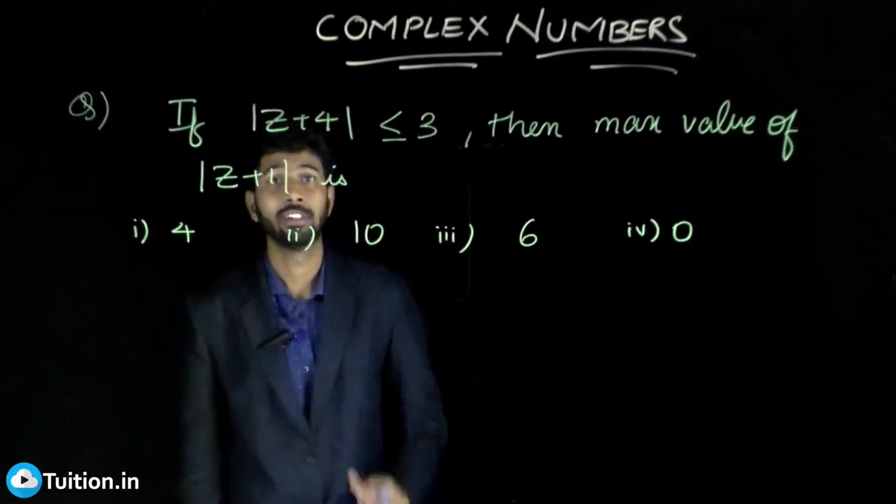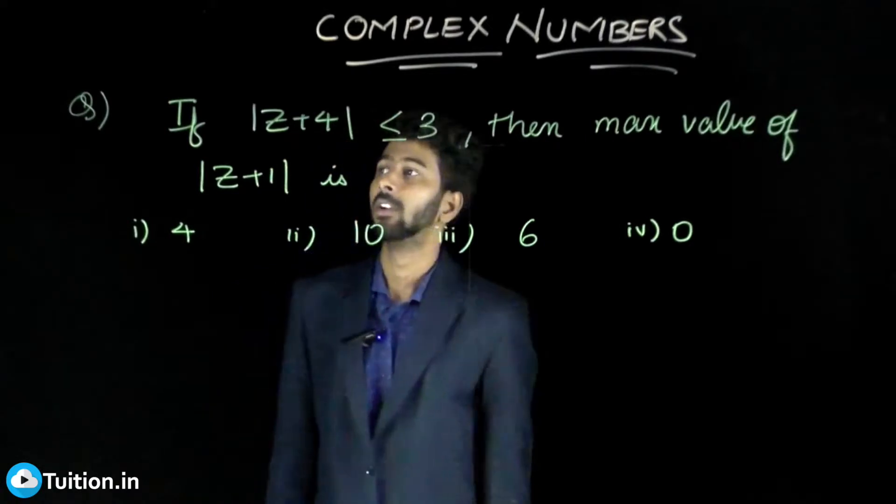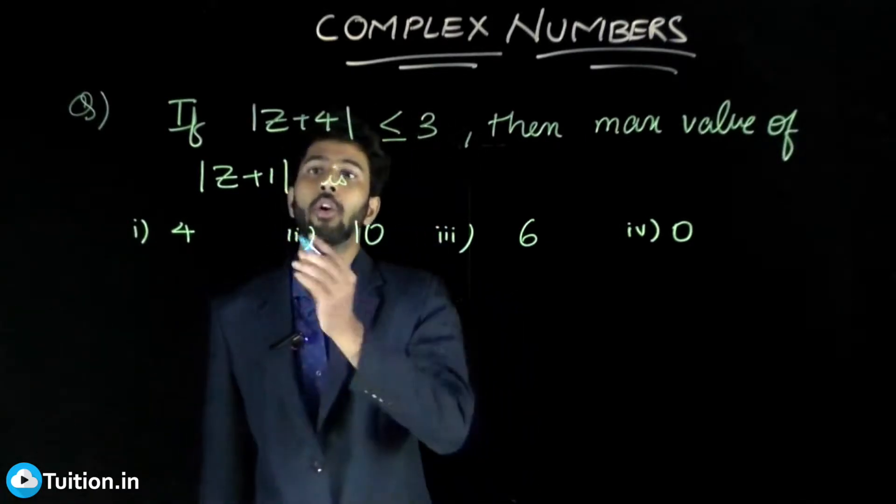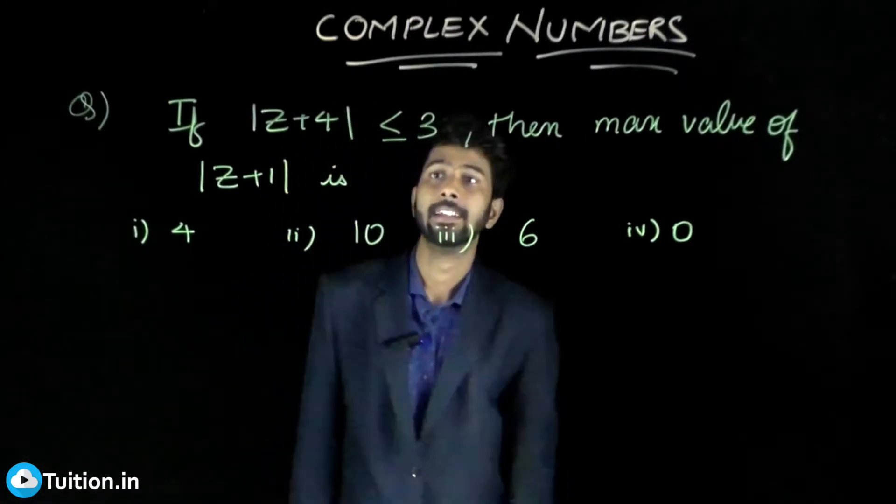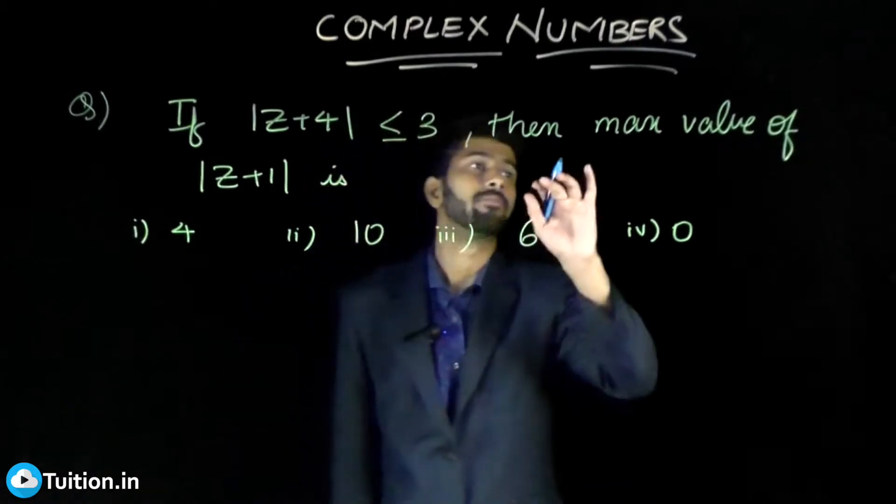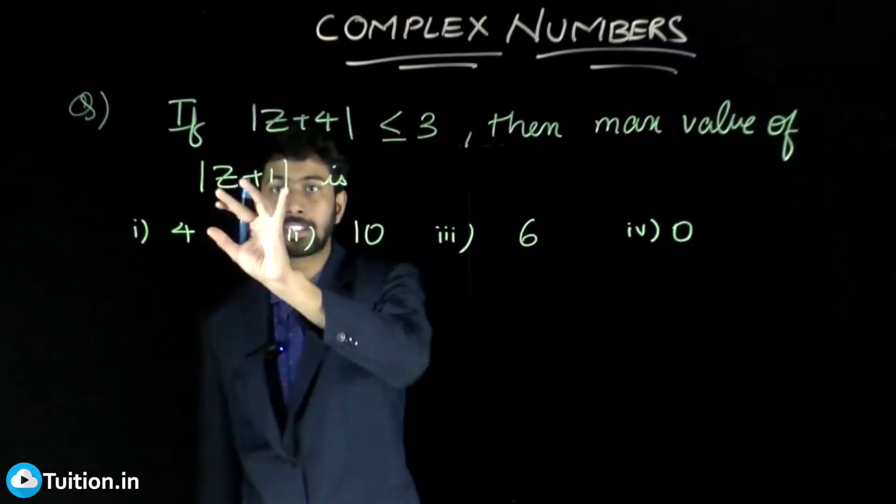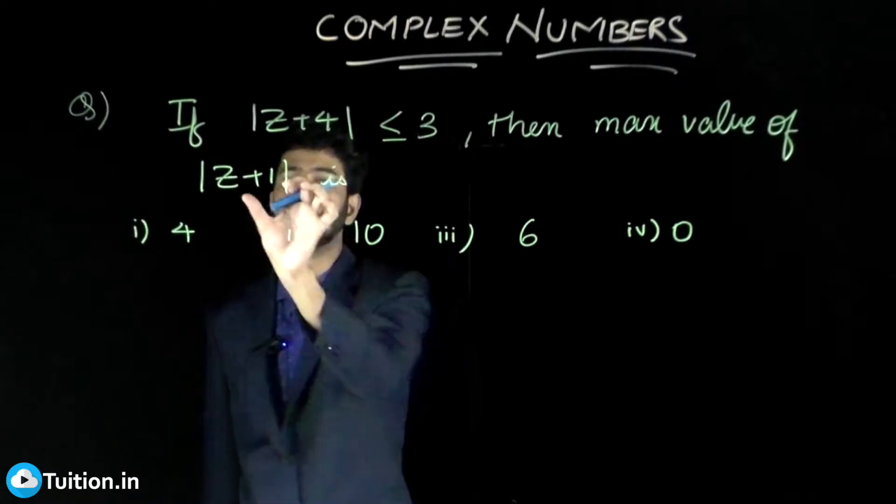Let us look at another previous question from complex numbers. It says if mod of z plus 4 is less than or equal to 3, then the maximum value of |z+1| is?